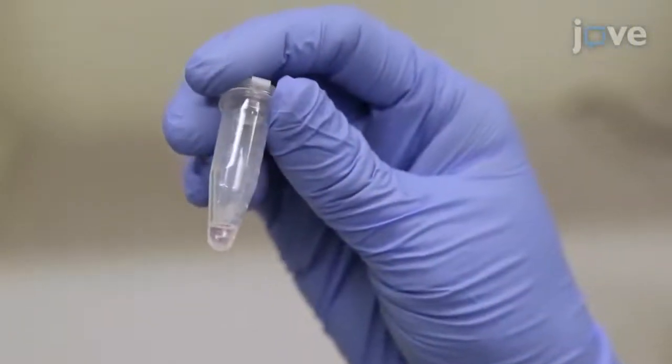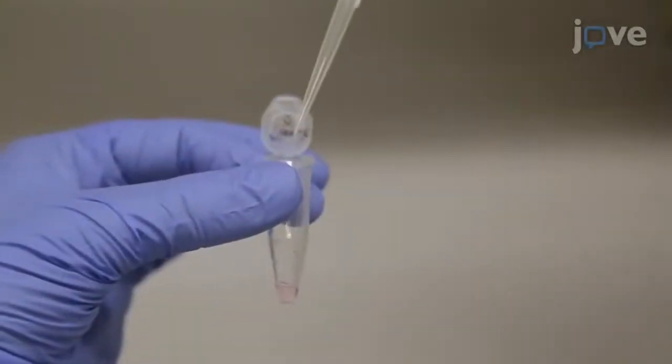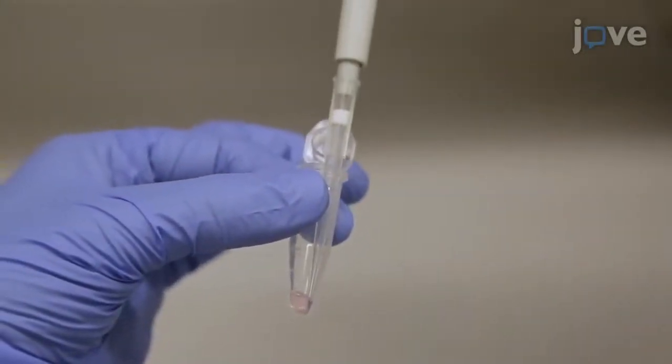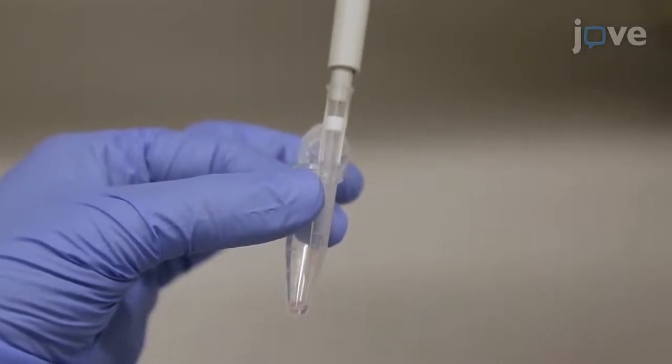Let the islets settle to the bottom of the microfuge tube. Then, use a pipette with a fresh P200 tip to carefully remove most of the supernatant, making sure to not remove any islets.